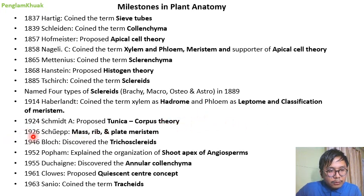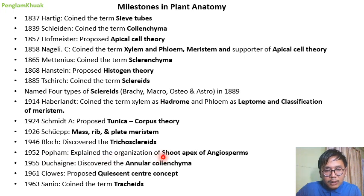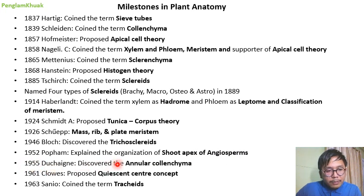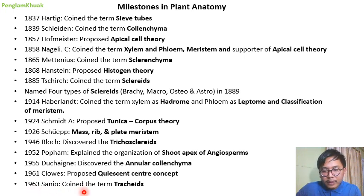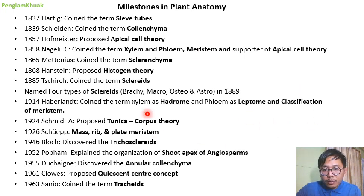In 1914, Herbert Lane coined the terms xylem as 'hadrom' and phloem as 'leptom,' and classified meristem. In 1924, Schmidt proposed the tunica-corpus theory, which we'll be studying in the next slide. In 1926, Schüepp proposed mass meristem in plant meristem. In 1946, Bloch discovered the trichosclereids. In 1956, Foster explained the organization of the shoot apex. In 1955, Duchaigne discovered annular collenchyma. In 1961, Clowes proposed the quiescent centre concept.